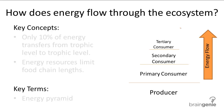As we have learned, food webs represent the energy flow through the trophic systems. Here's a quick overview: the producers will take energy from the sun and pass it on to primary consumers, who pass it on to secondary consumers, who pass it on to tertiary consumers.